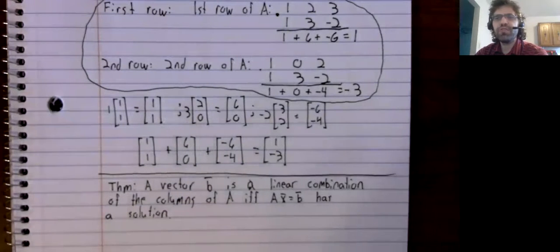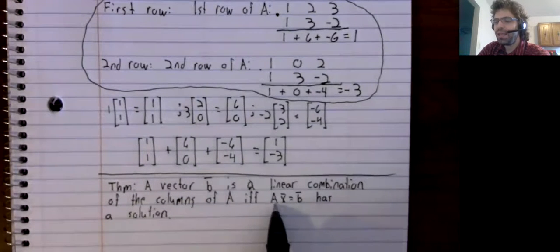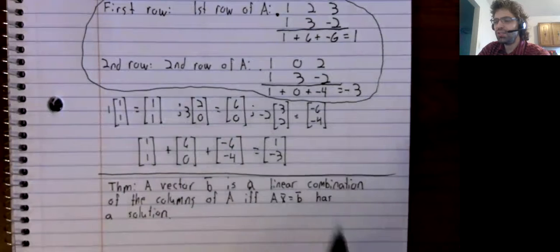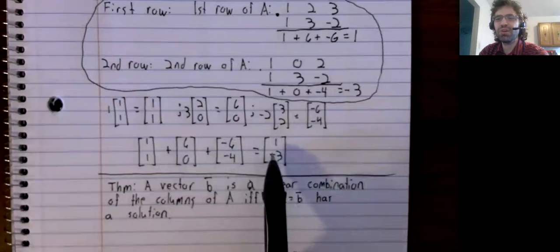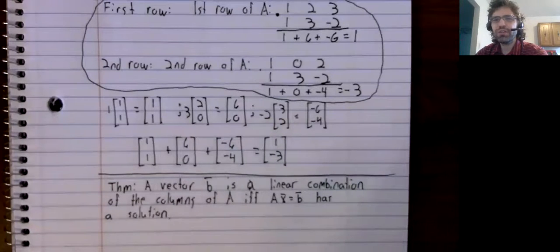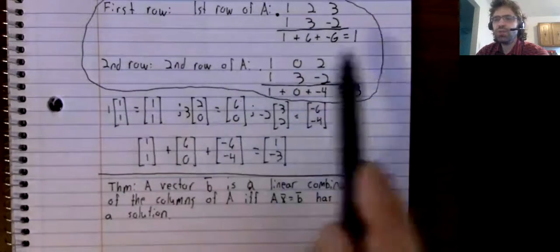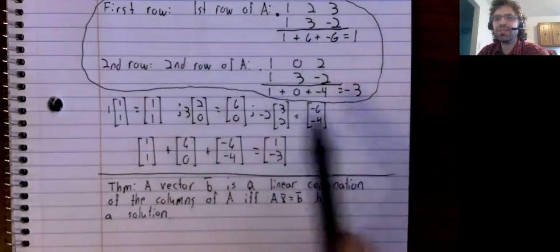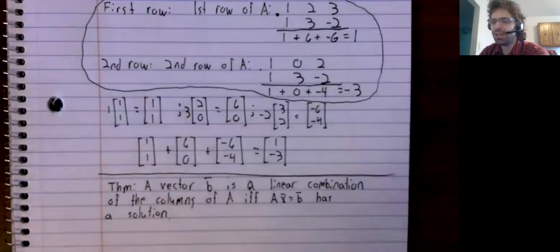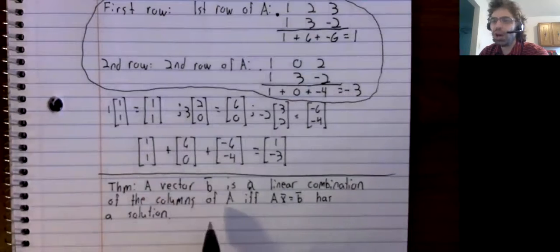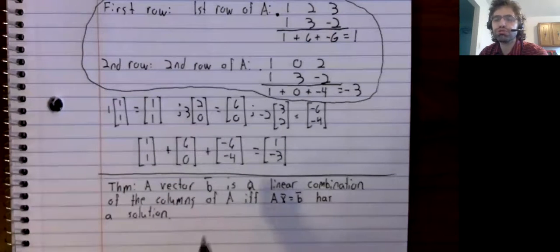When we define AX to be a linear combination of the columns of A, this theorem is basically trivial. If we define AX as do these things to the rows and add them together, this theorem is a lot more cryptic.